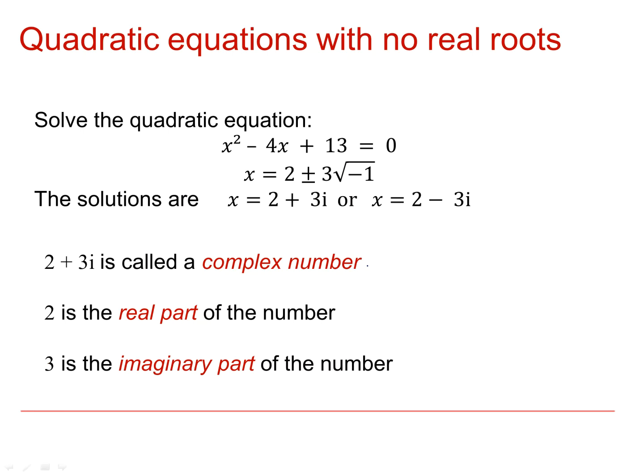We call 2 plus 3i a complex number because it's got more than one part. 2 is called the real part of the number and 3 is called the imaginary part of the number.